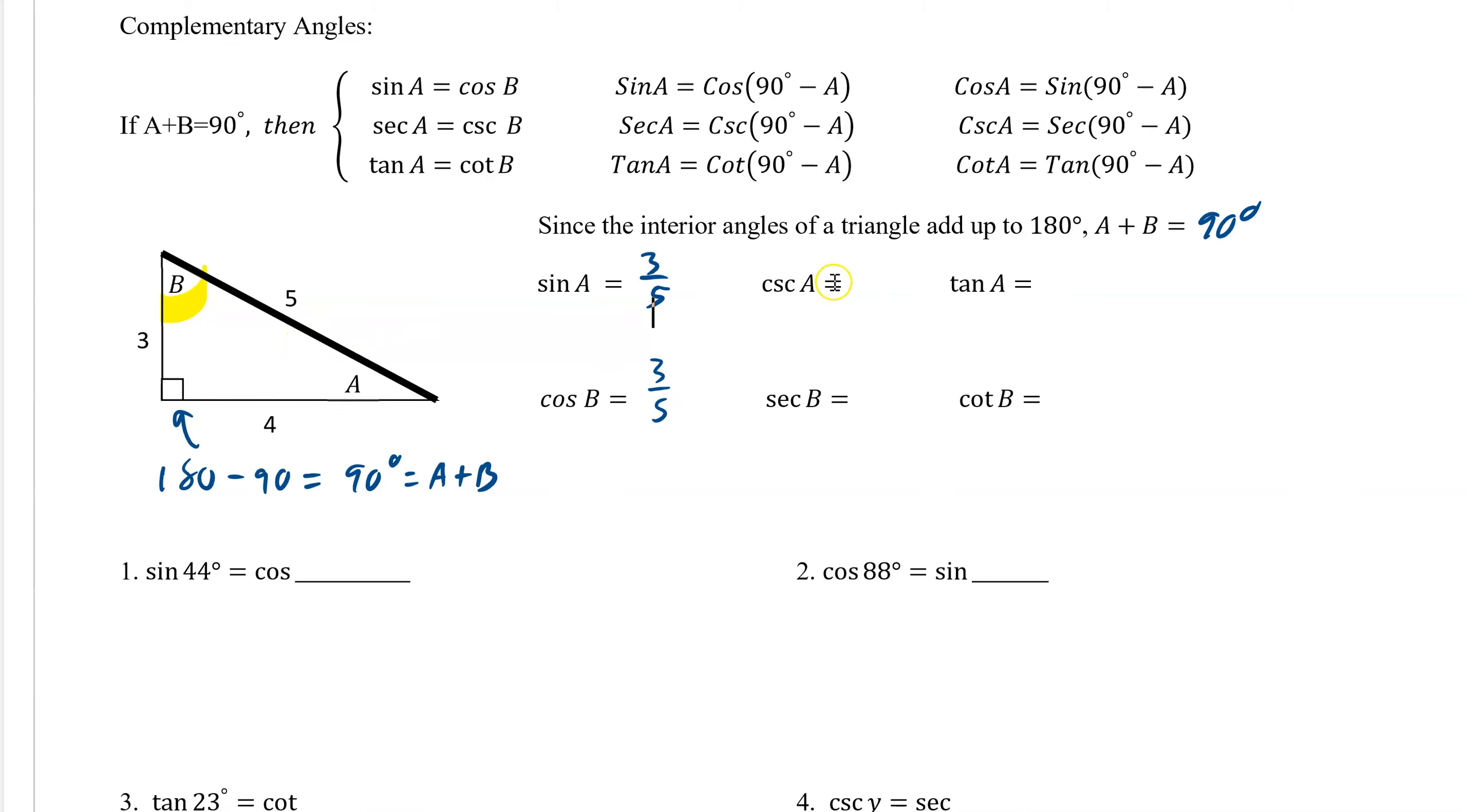Let's look at cosecant. Cosecant is the reciprocal of sine, and so all you have to do is flip these. And then what would secant be? Well, secant is the reciprocal of cosine, so we flip them. And look, they're also equal. So as long as a and b add up to 90, your cosecant and secant would be equal.